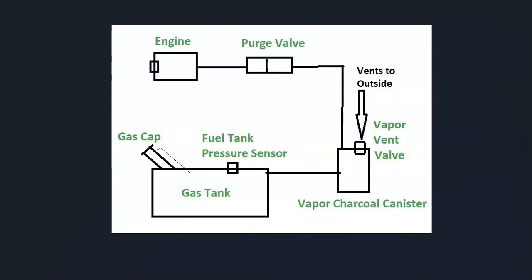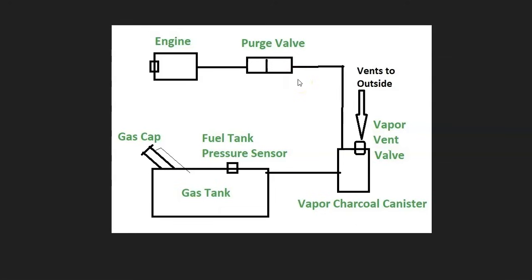The basics of the EVAP system: gas vapors leave the gas tank, go through a hose to the charcoal canister, which acts as storage for those vapors. On or near the charcoal canister is the vent valve. From there, gas vapors travel up to the top of the engine to the purge valve, which opens when the engine is running so vapors get burnt off, then closes when the engine is off so they don't escape.